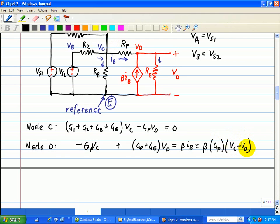Putting everything on the other side, we have minus GP factored out with 1 plus beta VC. Do the same thing for VD. So that's GP times 1 plus beta, plus GE, all that multiplied by VD. That's equal to zero.